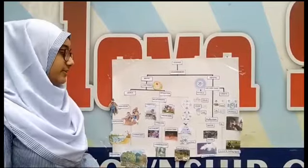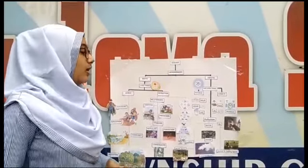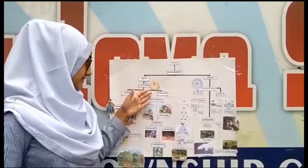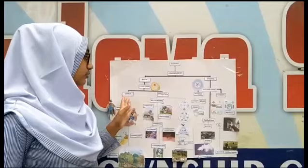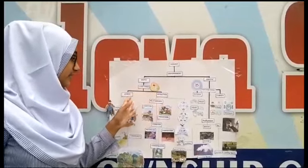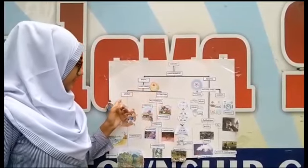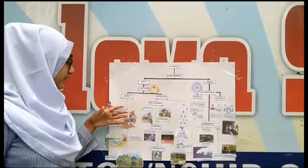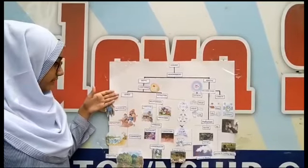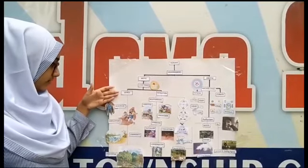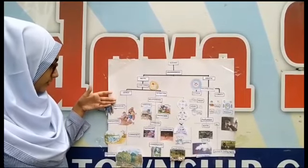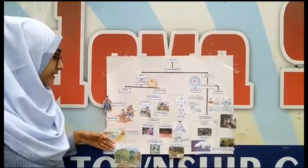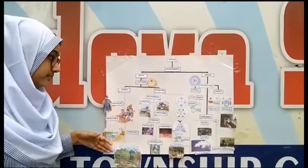Biotic means living things. All living things are made up of cells. There are two types of living things. The levels of organization include individual, population, community, and ecosystem.